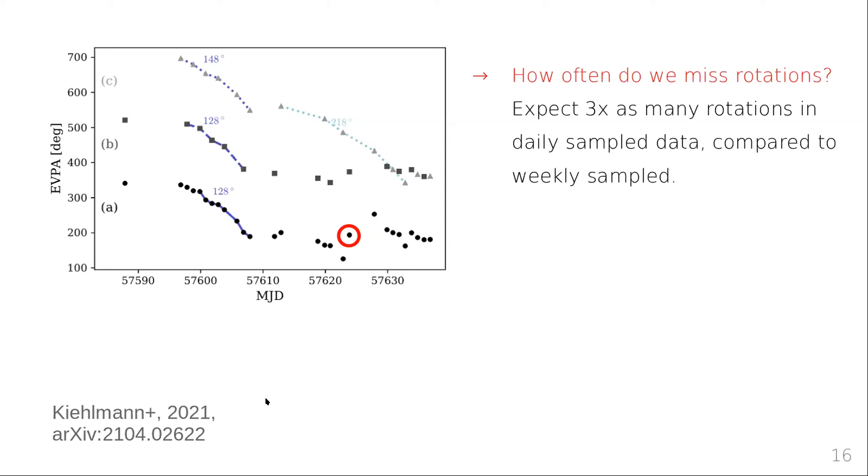So in this recently submitted publication, we asked the question, how often do we miss rotations? For that, we used weekly sampled data, which was our main campaign for three seasons, and compared it to our fourth season where we observed a smaller fraction of the sample with daily observations. Through that comparison, we demonstrated that we would expect to observe three times as many rotations in daily sample data than we did in our main campaign, which implies that we must have missed some rotations in our main campaign, in particular faster ones.